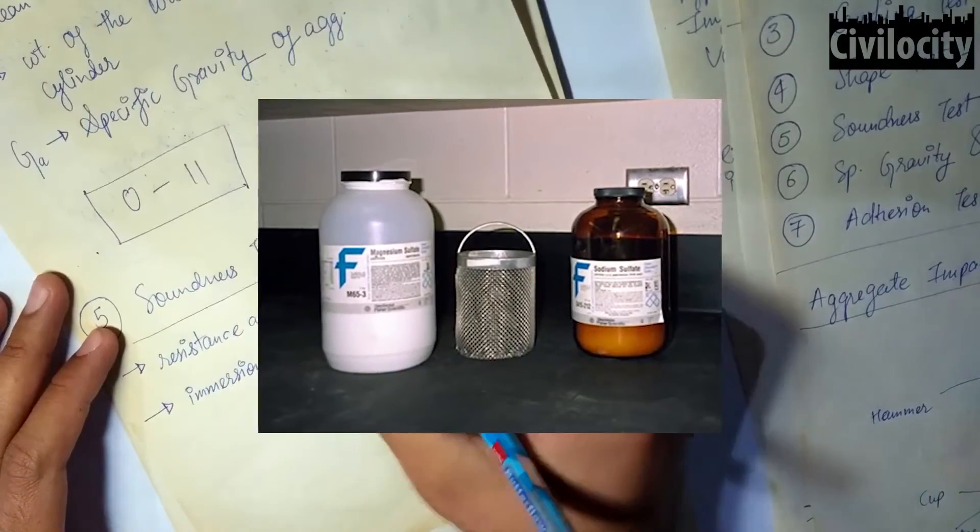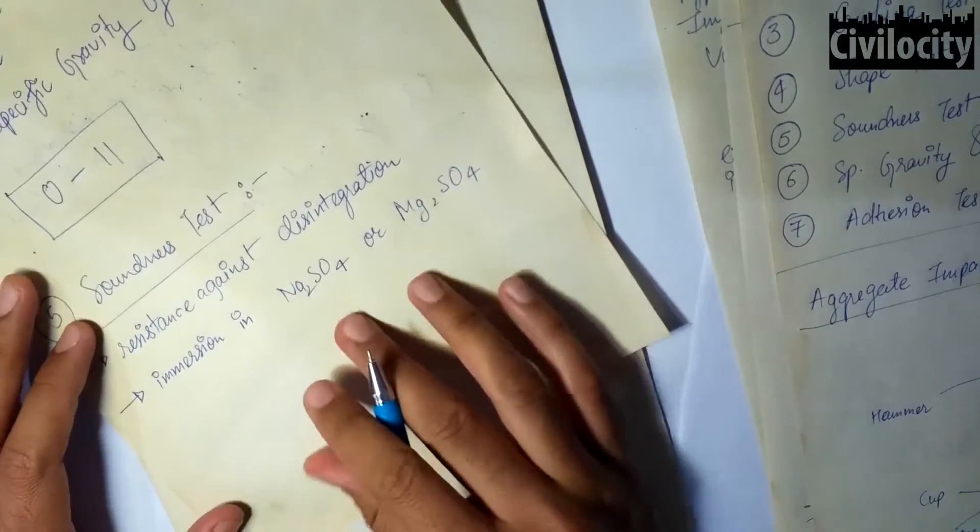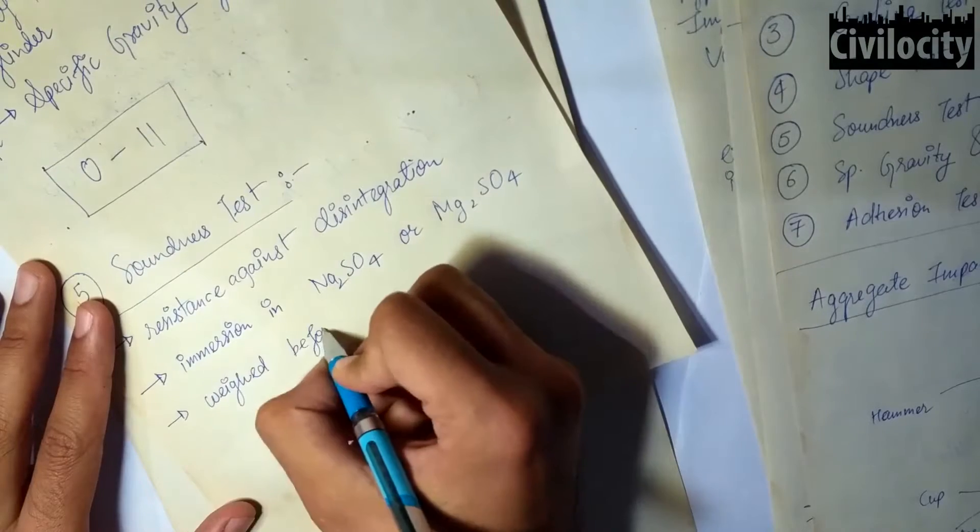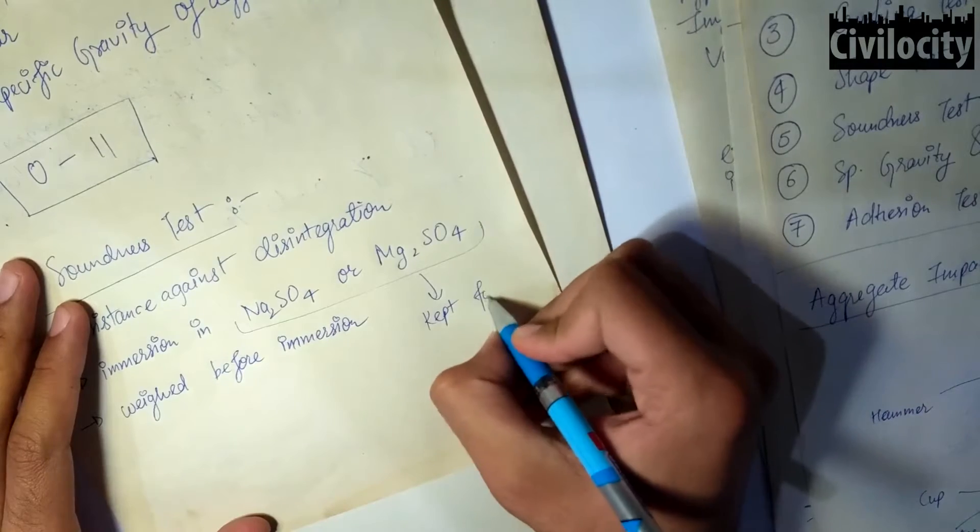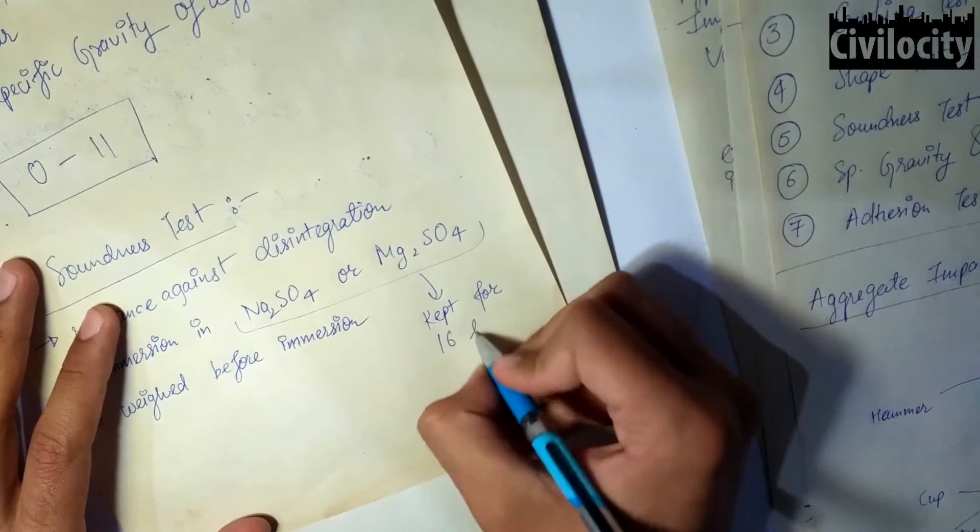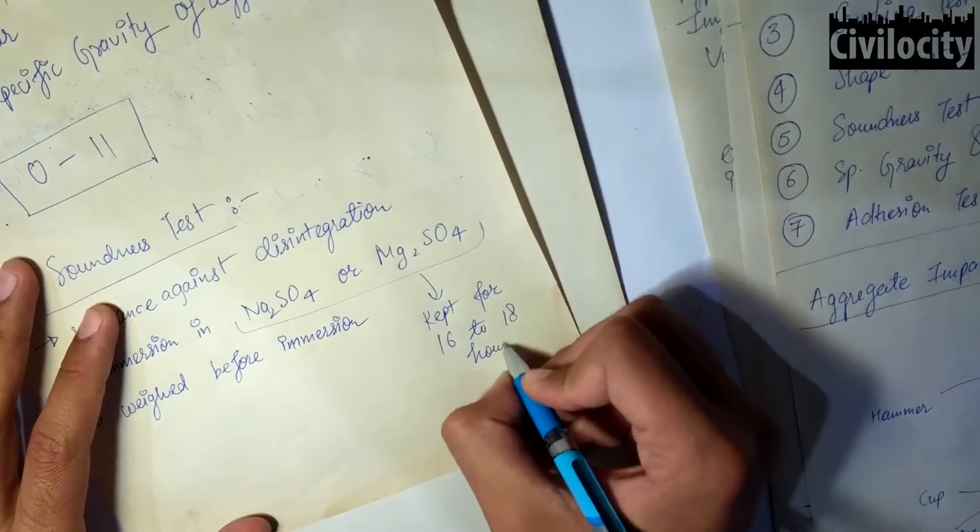Clean dry aggregates of specified size are weighed and the pieces are counted. After that, these aggregates are immersed in the saturated solution of sodium sulfate or magnesium sulfate for 16 to 18 hours.